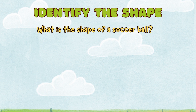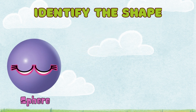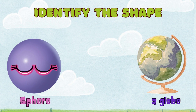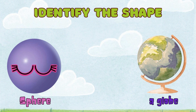What is the shape of a soccer ball? The answer is square. The shape of a soccer ball is square. A globe is a sphere shape.